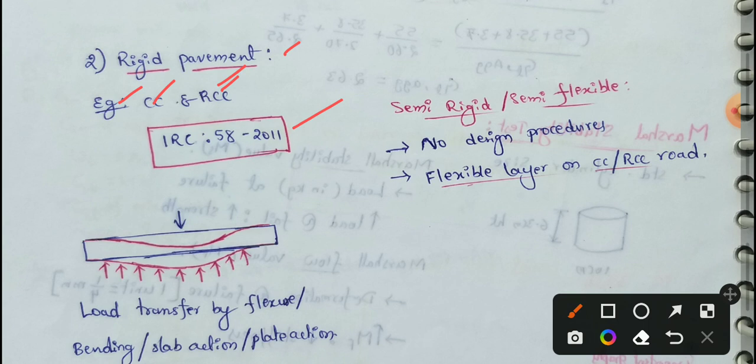Rigid pavements distribute load over wide area of subgrade because of its rigidity and high modulus of elasticity. We have rigid pavement, we have to put a design on the road.